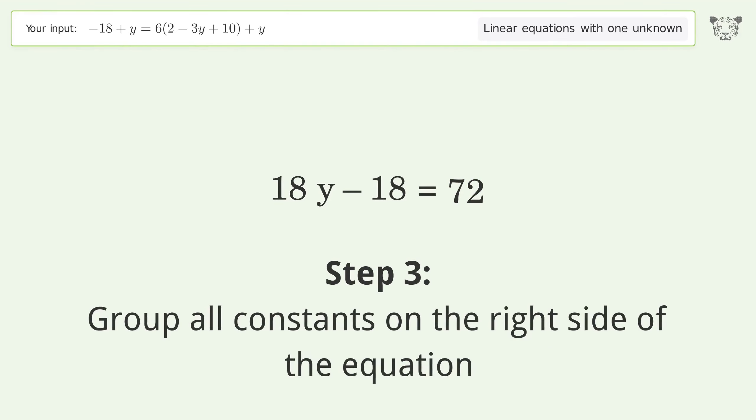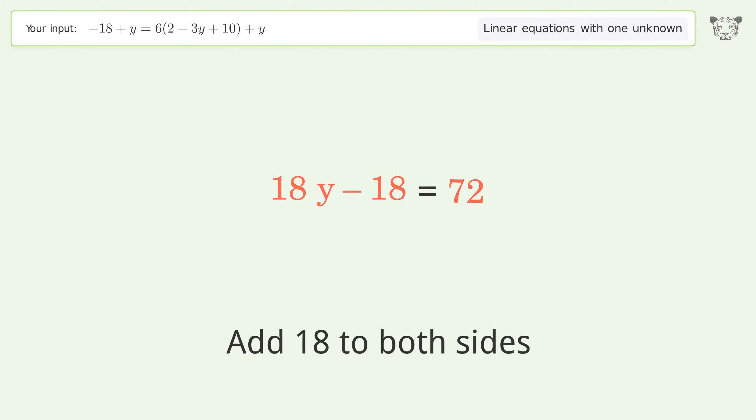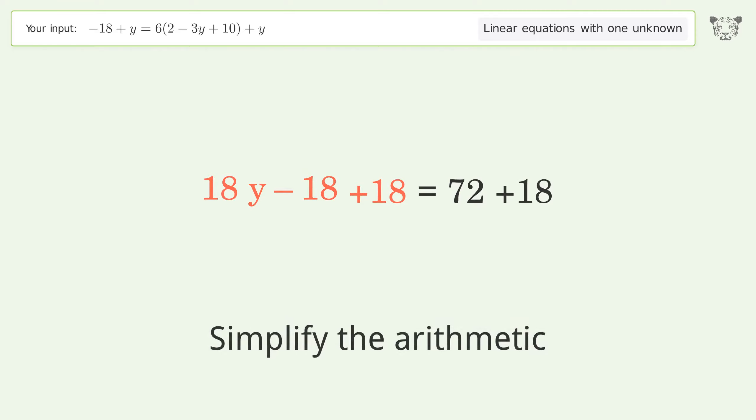Group all constants on the right side of the equation. Add 18 to both sides. Simplify the arithmetic.